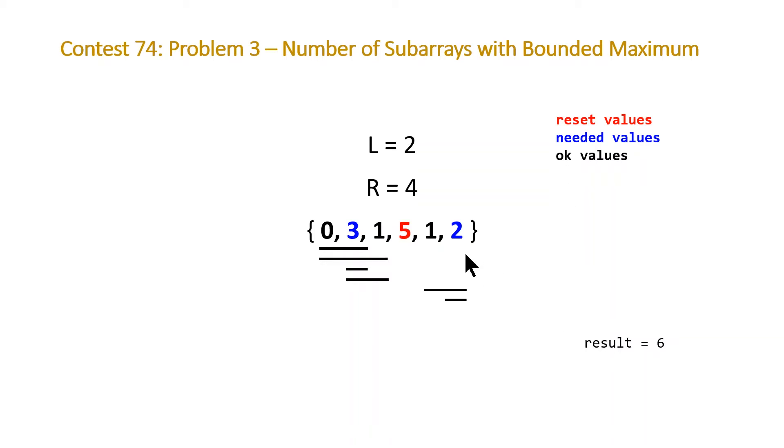Reset values are the easiest, those are just the ones that are greater than our maximum bound for our maximum value in our subarray. Needed values are the blue values in which we need at least one of these values in order to have our maximum value in our subarray to be greater than the lower bound.